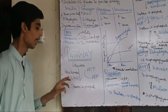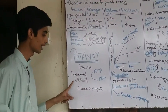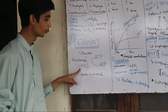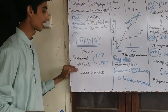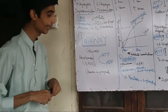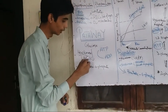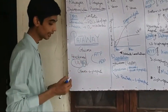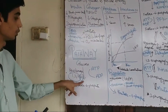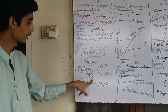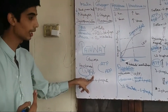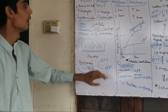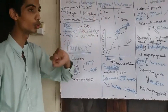Hexokinase has four isozymes: Hexokinase 1, 2, 3, and Hexokinase 4. Hexokinase 1, 2, and 3 are found in most tissues. Hexokinase 4 is present in specific tissues such as the liver, pancreatic beta cells, and kidneys. Hexokinase 4 is also known as Glucokinase.